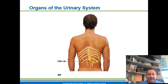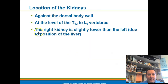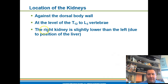Your kidneys sit around the 11th and 12th vertebrae, against the dorsal body wall, at the level of T11 to L3. The right kidney sits slightly lower than the left because the liver hangs down on the right side of the body, compressing that kidney down a little bit more.